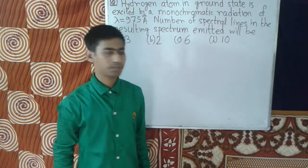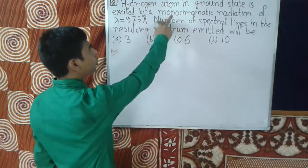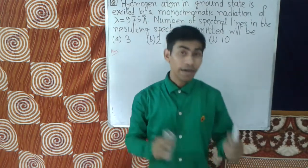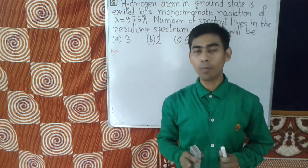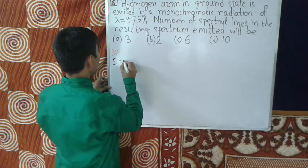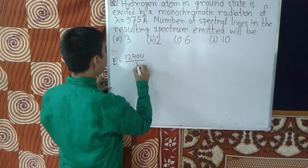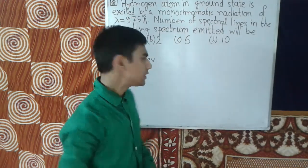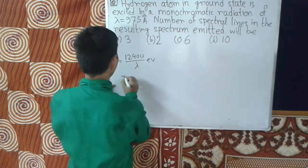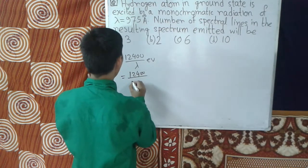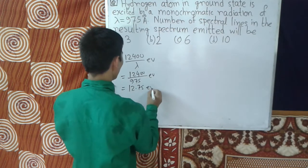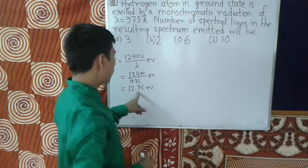Let's solve the question. We know that radiation consists of photons, and each photon has energy E equal to 12400 divided by lambda, in electron volts. Given that the monochromatic radiation has lambda equal to 975 angstrom, we get the energy of the photon as 12400 divided by 975, which equals 12.75 electron volts.